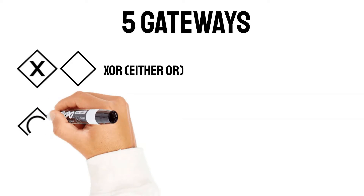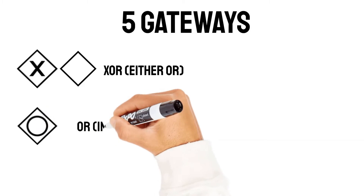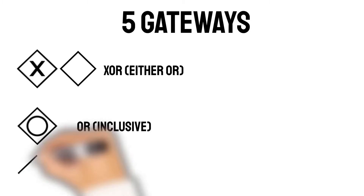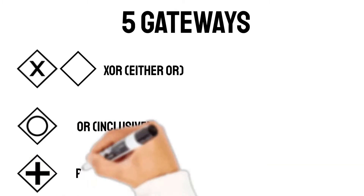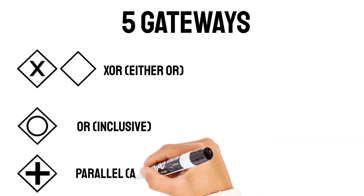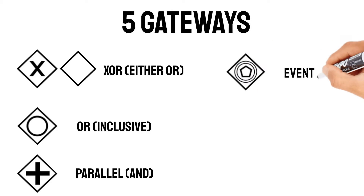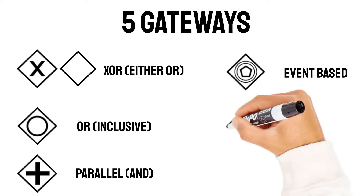The next one is the OR gateway. There is a very important difference between the OR and the either-or gateway — I will show you in a second. Then we have the parallel gateway, the event-based gateway, and the complex gateway.